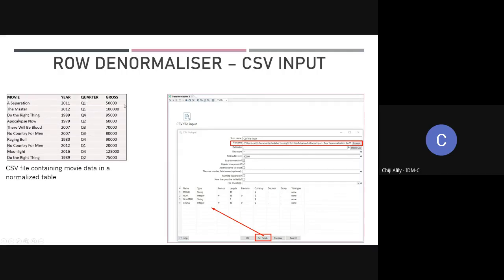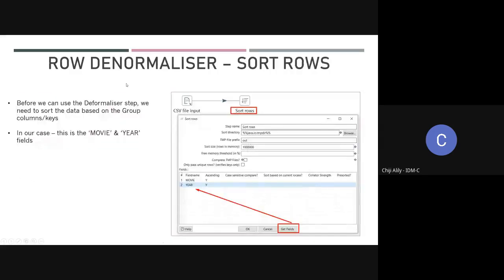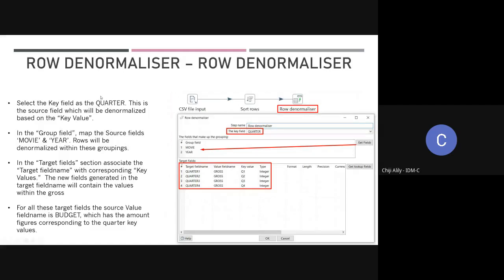Right now this is a normalized table — we have the movie, the year, the quarter with different quarter types (Q1, Q2, Q3, Q4) within one quarter column, and then the gross. In the denormalizer step, this is where the data is being pivoted. Right now we have one quarter field with different quarter values. So that's the field we're going to key on — the quarter field — because this is the field we want to denormalize and pivot. Instead of having one field for quarter, I want multiple fields: a field for quarter one, quarter two, quarter three, and quarter four.